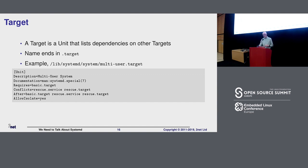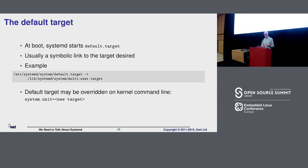The third part of the triumvirate is the target. A target is a group of services. Targets are units, they end in .target. When you look at targets, initially I thought if I looked at a target it would have a whole bunch of dependencies on services. In fact, when you look at a target, the dependencies are just on other targets. So how does that work? There is a thing called a default target — this is the target that's going to be started when you boot up. It's called default target, it's a symbolic link, in this case to multi-user target, which would be the non-graphical login.